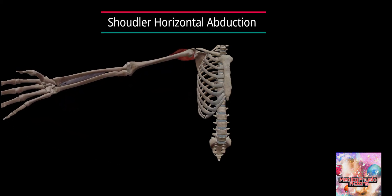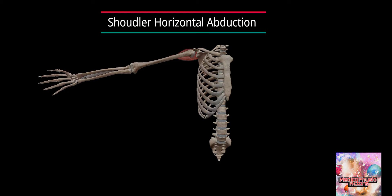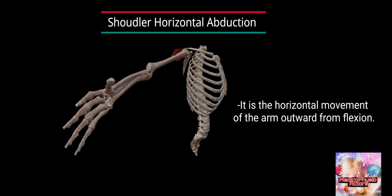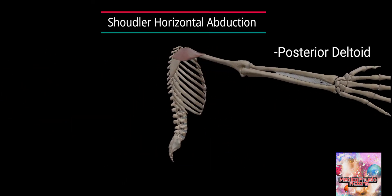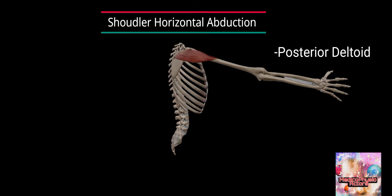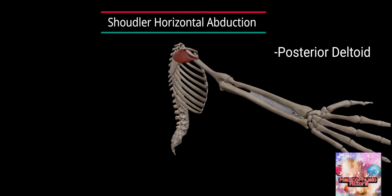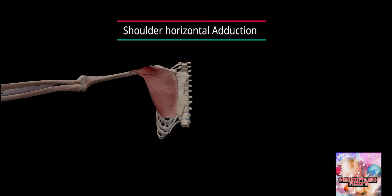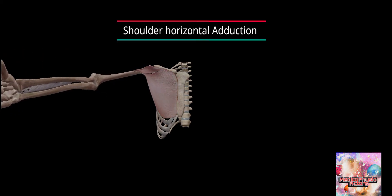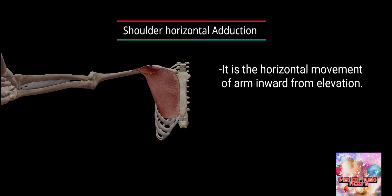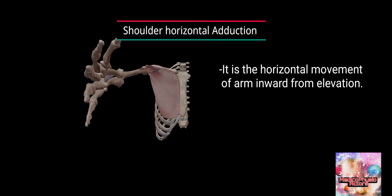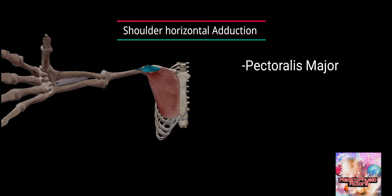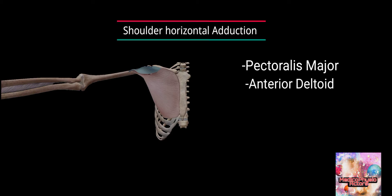Shoulder horizontal abduction is the horizontal movement of the arm outward from flexion. Shoulder horizontal adduction is the movement of the arm inward from elevation. The muscles acting include pectoralis major and anterior deltoid.